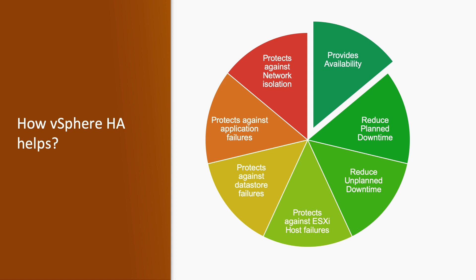vSphere HA also protects against datastore failure — if any datastore has an issue, all virtual machines in that datastore will be migrated to another datastore using Storage vMotion. It protects against application failure by monitoring the operating system and virtual machine, and in the event of failure, resetting the virtual machine on another available ESXi host. It also protects against network isolation — if there is any network isolation between ESXi hosts, it will automatically failover to another available ESXi host.